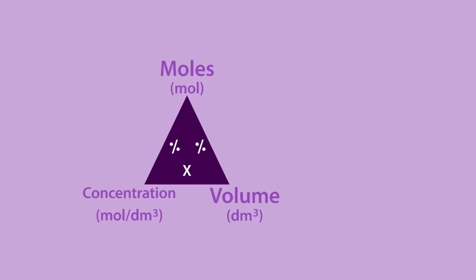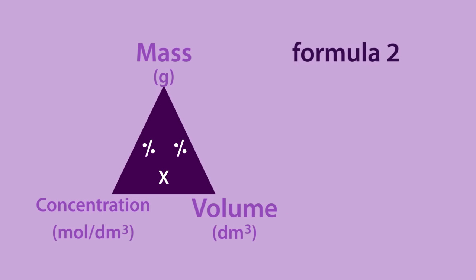The second way of calculating the concentration is very similar, except sometimes we use a mass of a substance divided by volume rather than a mole of a substance. The formula is mass divided by volume and has the unit grams per decimetre cubed rather than moles per decimetre cubed. Its formula triangle looks like this.